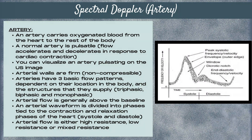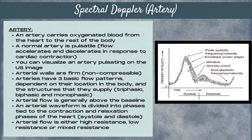These three patterns are triphasic, biphasic, and monophasic. Arterial flow is generally above the baseline. An arterial waveform is divided into phases which are tied to the contraction and relaxation phases of the heart, which is systole and diastole.